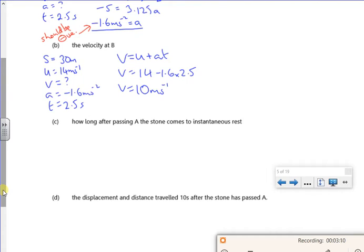Right, let's have a look at this one now. So think about what this means. It starts off at A, slows down at B, but then I stop. So I want to find out where V is 0. So I don't know S, I don't care about S. U is 14, V is 0, A is minus 1.6.